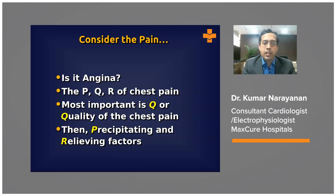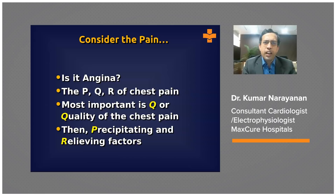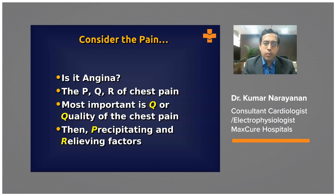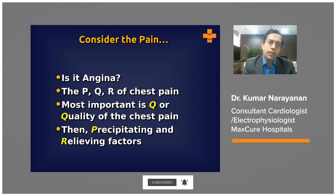When we say consider the pain, the key question is: is this angina, or is it something else? Is this originating from the heart and of a potentially serious nature? A classical framework — the PQR of chest pain — mirrors the P, Q, and R waves in the ECG. The most important is Q, the quality of the pain, flanked by P for precipitating factors and R for relieving factors.